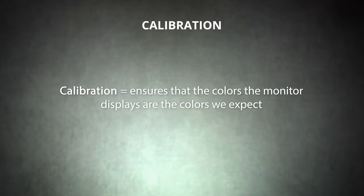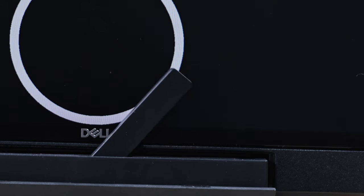While color space and color depth define the range and distinct shades of color that can be reproduced, the calibration of the monitor will determine the accuracy of those colors. In other words, calibration ensures that the colors the monitor displays are the colors we expect. Most monitors will come pre-calibrated from the factory and may even include a calibration card with calibration information for your specific display. However, you can also use on-screen test patterns, software tools, or a device called a colorimeter to calibrate and recalibrate your monitor as needed.